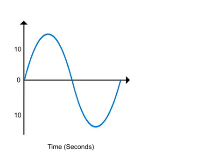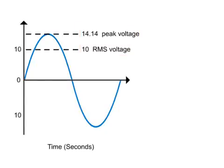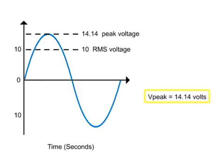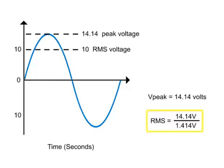Therefore, to compensate, AC circuits need higher voltage input. When the power in the DC matches the power you produce in the AC, the AC voltage of 14.14 volts at its peak is as effective in producing the same power as 10 volts in a DC circuit. Therefore, we can define the AC peak value as 1.414 times 10 volts, or 10 RMS, which equals 14.14 volts. You may also determine the RMS by dividing the AC peak value of 14.14 volts by 1.414 to get 10 volts, or 10 RMS.